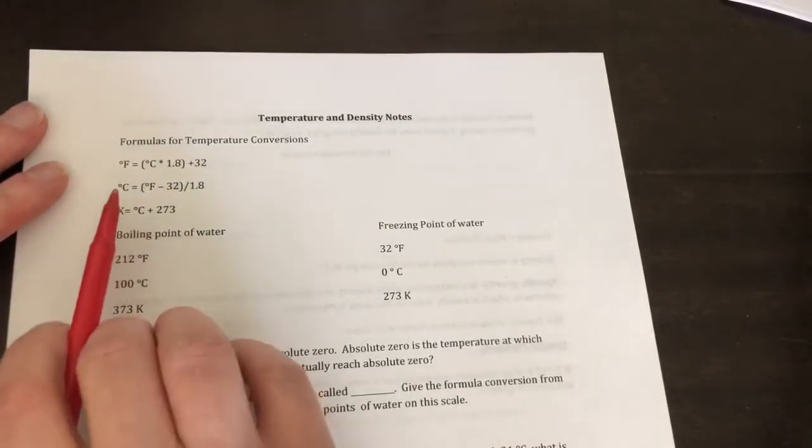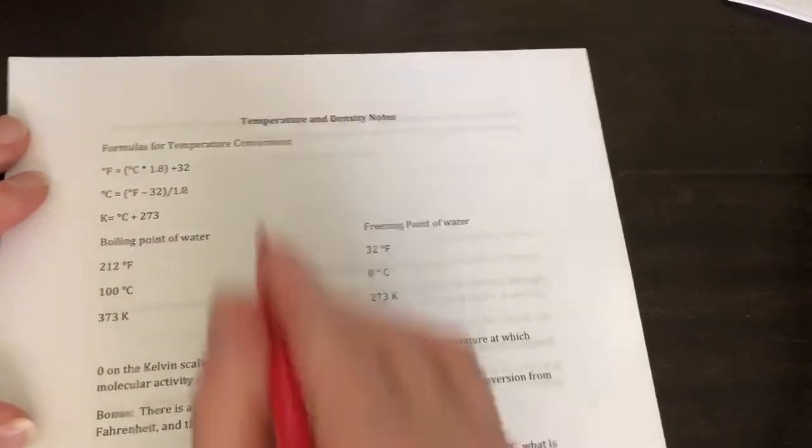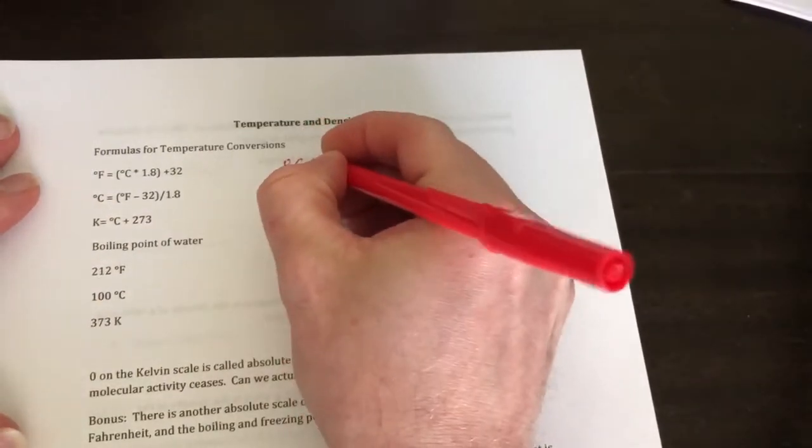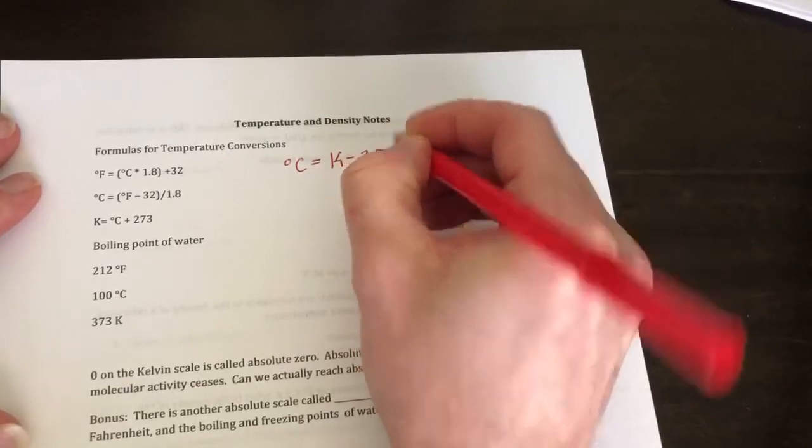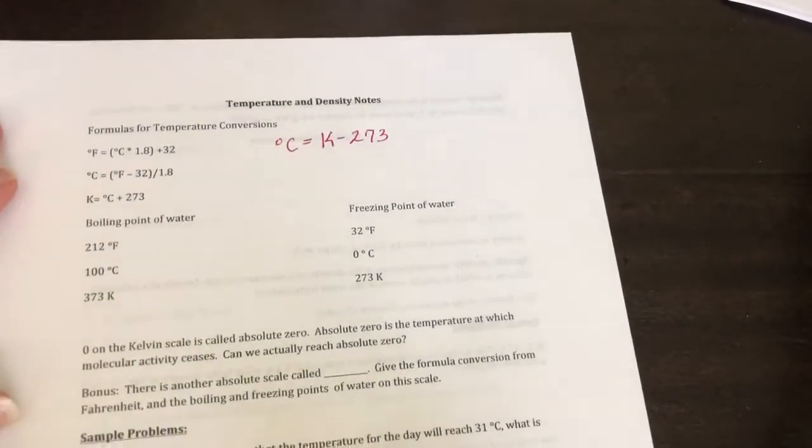Now, it's important to know that Kelvin doesn't have degrees and if you want to write this formula down, degrees Celsius from Kelvin is Kelvin minus 273. That might be useful for you.